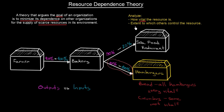The second thing to analyze is the extent to which others control the resource. Who is controlling the bread? Mostly the bakery, because they are producing it. And also the seafood restaurant has quite a lot of control because they are taking 90% of the bakery's output. If they wanted to, they could make a better agreement with the bakery and simply starve us out of this very crucial resource. So both the bakery and the seafood restaurant are controlling the resource to a quite big extent.